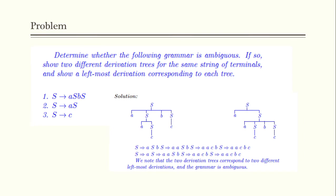Now let's look at a problem: determine whether the following grammar is ambiguous. The production rules are: S goes to aSbS, S goes to aS, S goes to c. Starting from S, one derivation produces 'aacbc', and another derivation using a different order of rules also produces 'aacbc'. Since the same string is produced with different derivations, the grammar is ambiguous.